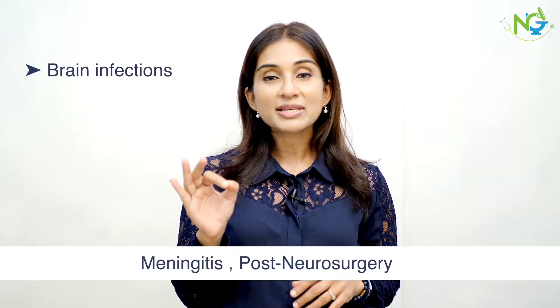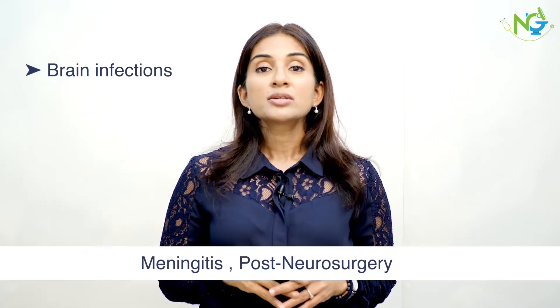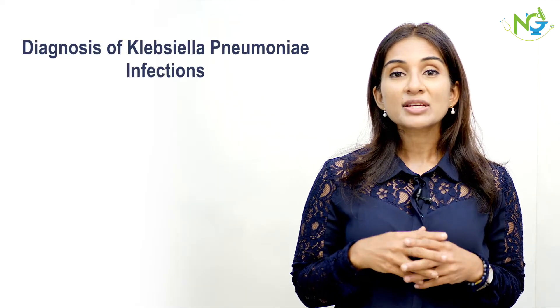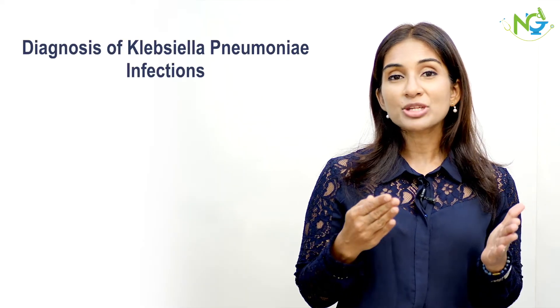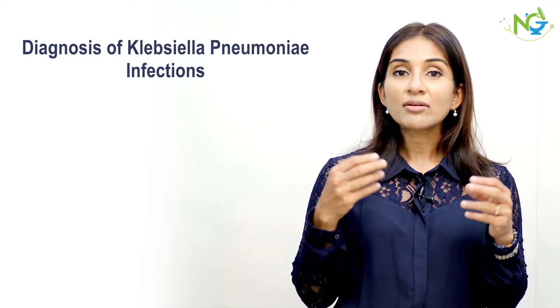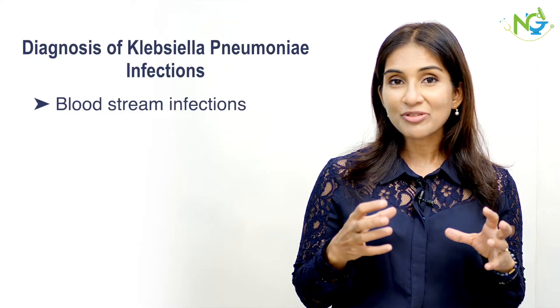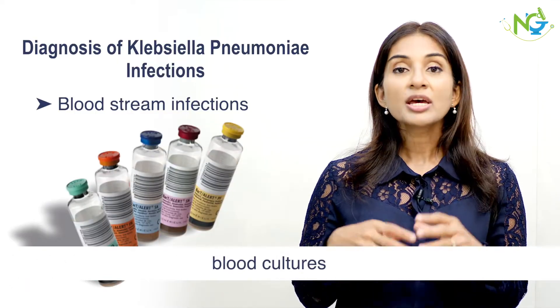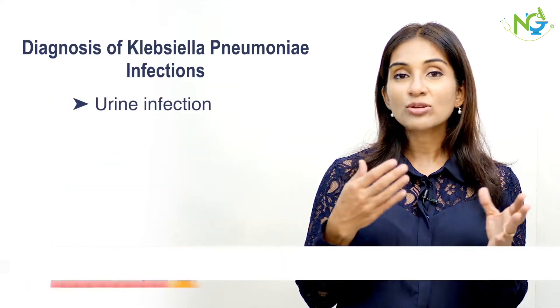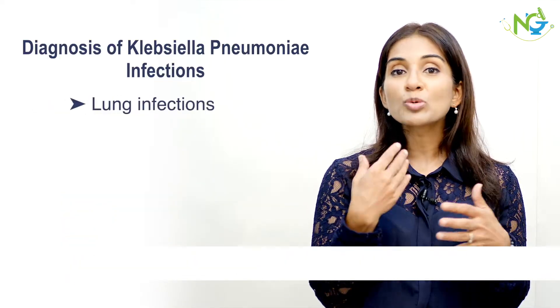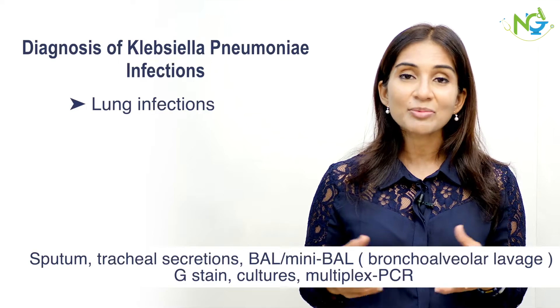Brain infections due to Klebsiella are also life-threatening. How do we diagnose it? Especially if a patient is in the ICU and we are suspecting a bloodstream infection, blood cultures are very important. For urine infections, urine cultures are needed, and if there is a lung infection, sputum culture or multiplex PCRs are available for making the diagnosis. The sample must be sent for appropriate microscopy, which is gram stain, as well as proper cultures.